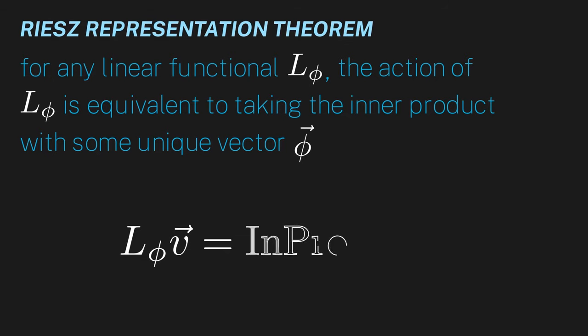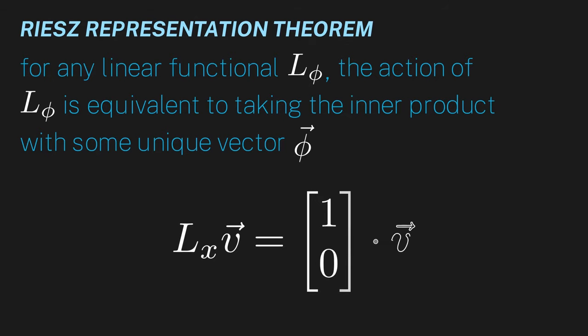So in our R2 example, this unique vector was 1, 0, and acting with the LX operator was equivalent to taking the dot product with 1, 0.